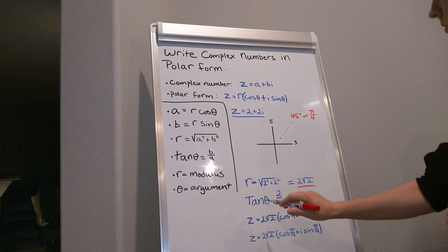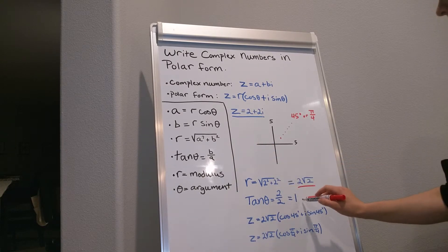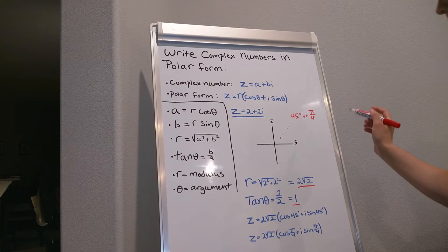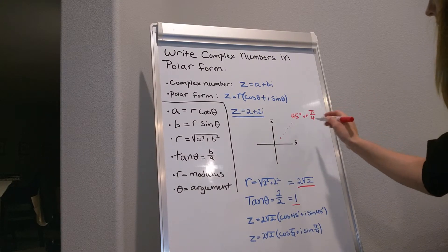And then our tangent theta is b over a, which gives us 1. And so now we're going to just plug in our r and our theta.